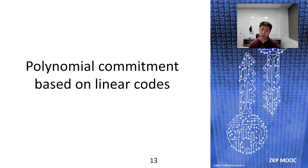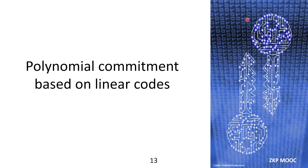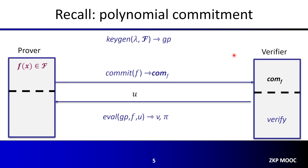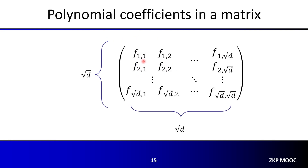With this background, in the second segment I'm going to show how to build polynomial commitments using linear codes. The setting has four algorithms: key generation, commit, evaluate, and verify. The scheme I'm going to show is derived from the papers of Ligero, Bootle et al. 2017, Brakedown, and Orion. The scheme has a square-root-sized proof and square-root verification cost.